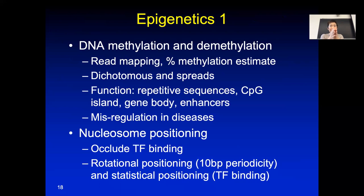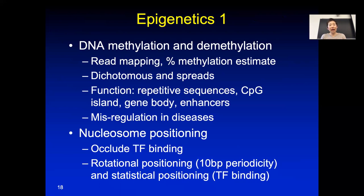If you have one CG and a nearby CG within a couple hundred bases, they usually have correlated DNA methylation patterns because the DNA methylation enzyme spreads the signal. DNA methylation has many different functions. The human genome has many repeats — in fact, half of the human genome is repetitive sequences — and DNA methylation mostly covers these regions to make them inactive, so DNA methylation mostly has a silencing effect.